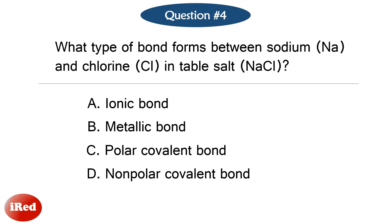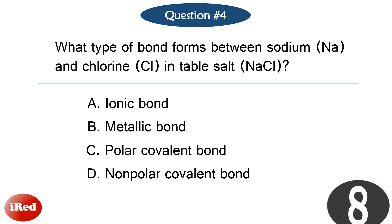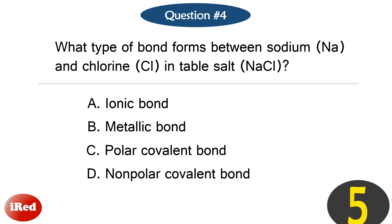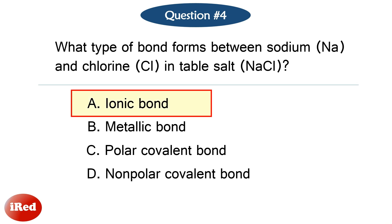Question number 4. What type of bond forms between sodium and chlorine in table salt? The correct answer is letter A, ionic bond.